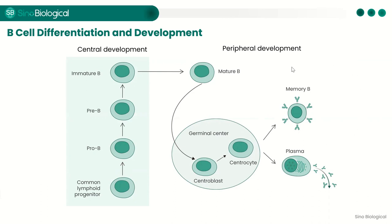The second stage is development in peripheral immune organs, where mature B cells migrate and are activated by specific antigens with the help of T cells. These activated B cells undergo proliferation and differentiation, forming germinal centers. Mature B cells differentiate into plasma cells and memory B cells. Plasma cells are terminally differentiated B cells whose main function is to produce antibodies, while memory B cells can survive long-term and rapidly produce antibodies upon re-stimulation.